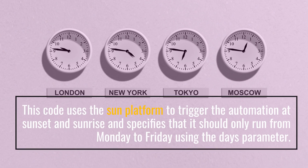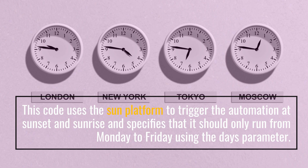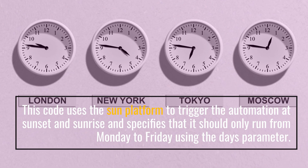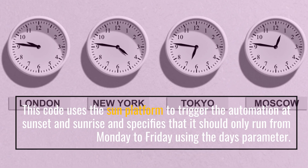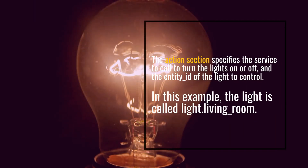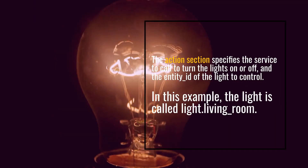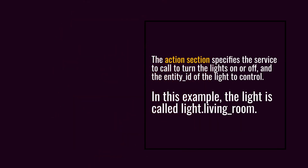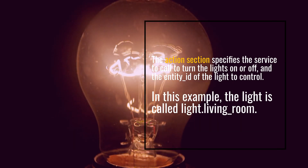This code uses the sun platform to trigger the automation at sunset and sunrise, and specifies that it should only run from Monday to Friday using the days parameter. The action section specifies the service to call to turn the lights on or off, and the entity_id of the light to control. In this example, the light is called light.living_room.